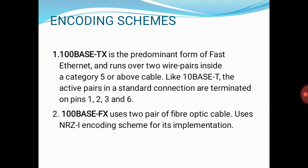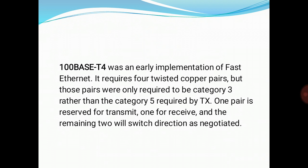The second encoding scheme is 100BaseFX, which uses two pairs of fiber optic cable and the NRZ-I encoding scheme for its implementation. Third is 100BaseT4, an early implementation of Fast Ethernet. It requires four twisted copper pairs, which were only required to be category 3 rather than category 5. One pair is reserved for transmit, one for receive, and the remaining two switch direction as negotiated.